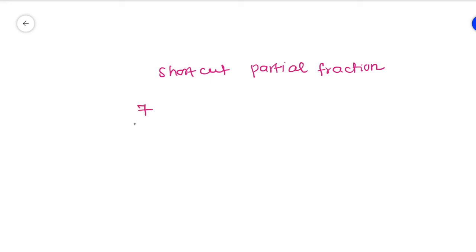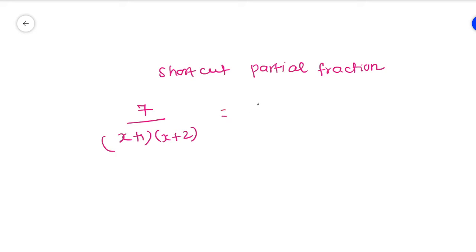For example, if you want to find the partial fraction of 7 divided by (x+1)(x+2), what we do is factorize like this: A by (x+1) plus B by (x+2). Then we do some algebraic manipulation and find the value of A and B.